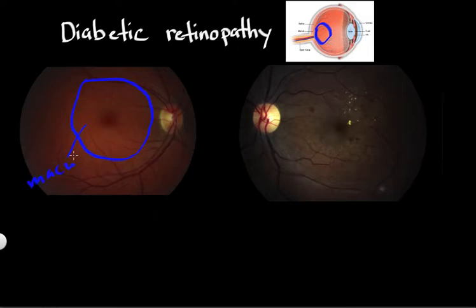Diabetics get damage to the retinal blood vessels, and that can cause bleeding and swelling in the macula. And if we look over here on the right,